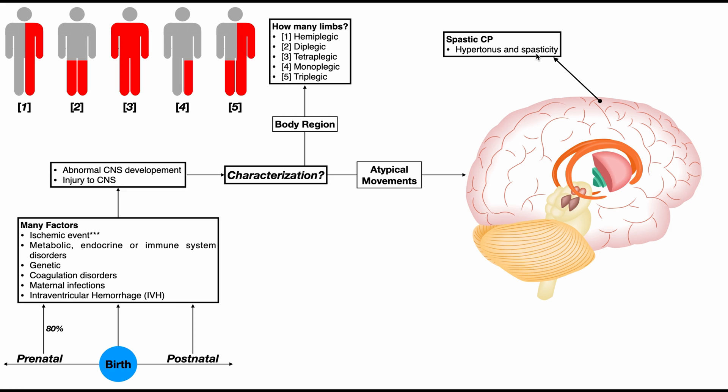The term 'spastic CP' is older terminology and doesn't necessarily mean the person will have only spasticity. Some will have spasticity, some will have hypertonus, and some will have a mixture of both. This is caused by damage to the motor cortex of the cerebral cortex.